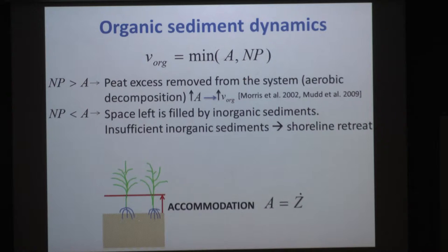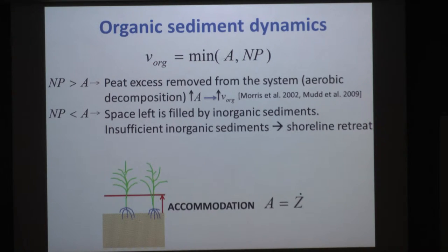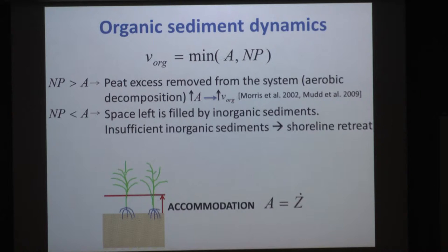What we did was start with a very simple rule: the rate of organic sedimentation in the deltaic plain is the minimum between the accommodation rate created by sea level rise or subsidence, and net production — where net production is the balance between productivity and decomposition. If net productivity is larger than the accommodation created, there is excess organic matter exposed and rapidly oxidized. If net productivity is smaller than the accommodation created by sea level rise, extra space can be filled by inorganic sediments — and if those are insufficient, this could potentially lead to retreat of the system.